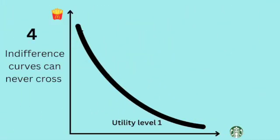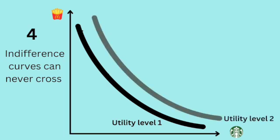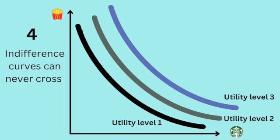Fourth, the curves can never cross. We define each curve as representing a constant level of utility. As each curve is for a different level of utility, they cannot by definition cross each other.